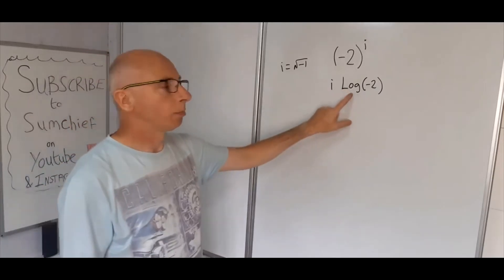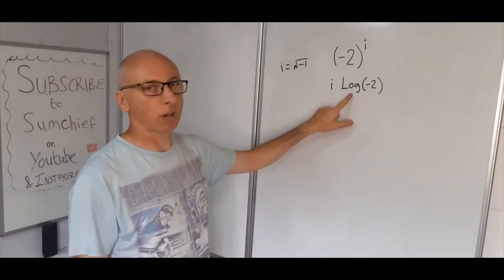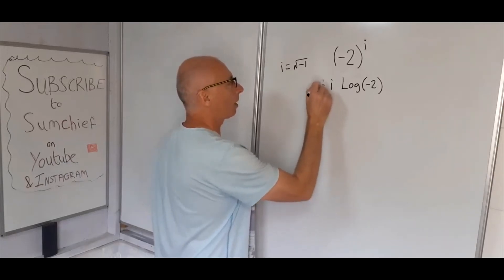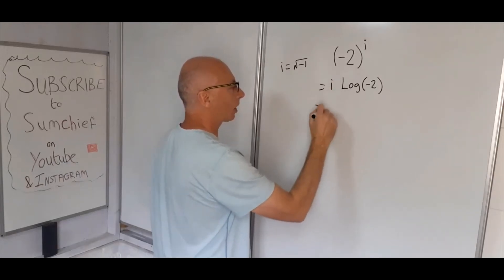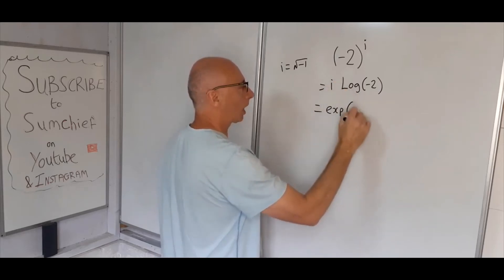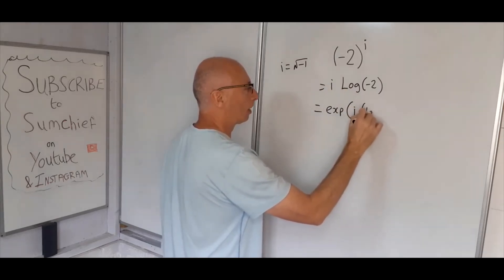So now what we need to do is produce the inverse function of log of minus two. And what we can say now is this, let's bring the equal sign down there, so we take the exponential now of i, and then what we can do now, just put another bracket in there, log of minus two.